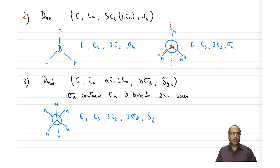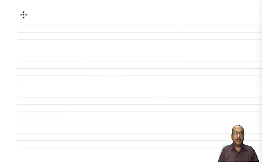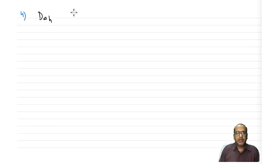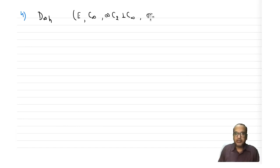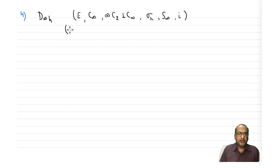Next in the category is D∞h. The elements and corresponding operations will be C∞, infinity C2s perpendicular to C∞, σh, S∞, and i. The typical characteristic of molecules in this group is that they are centrosymmetric linear molecules.